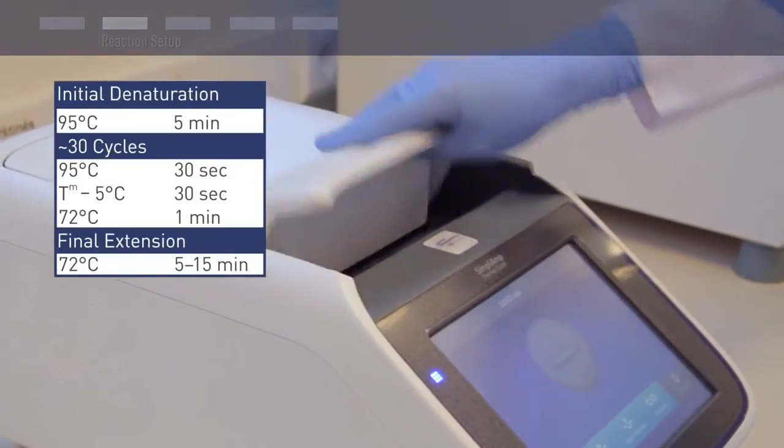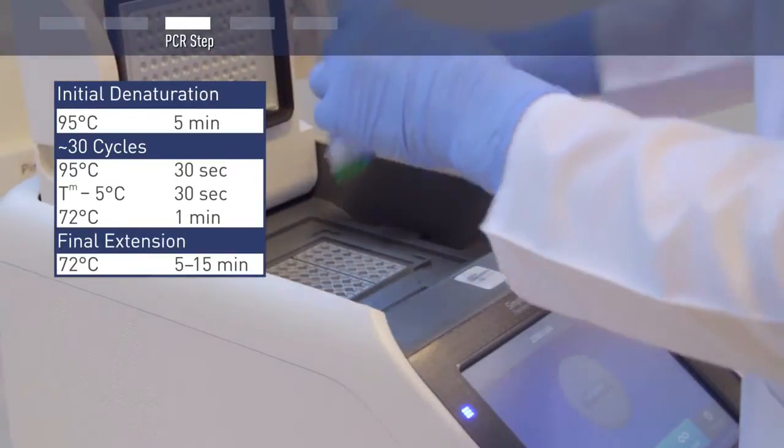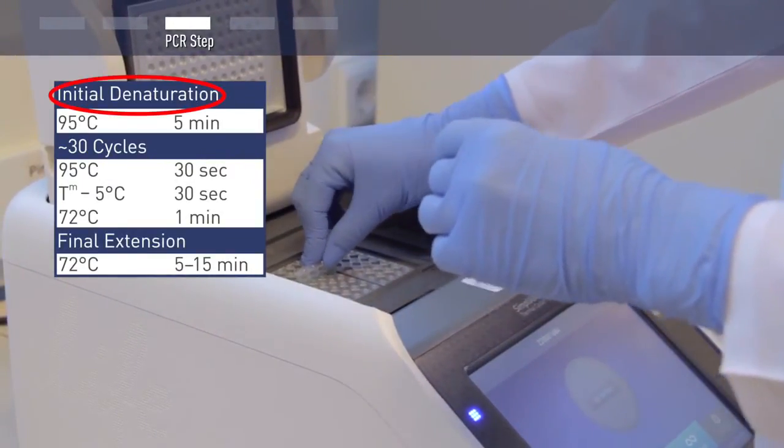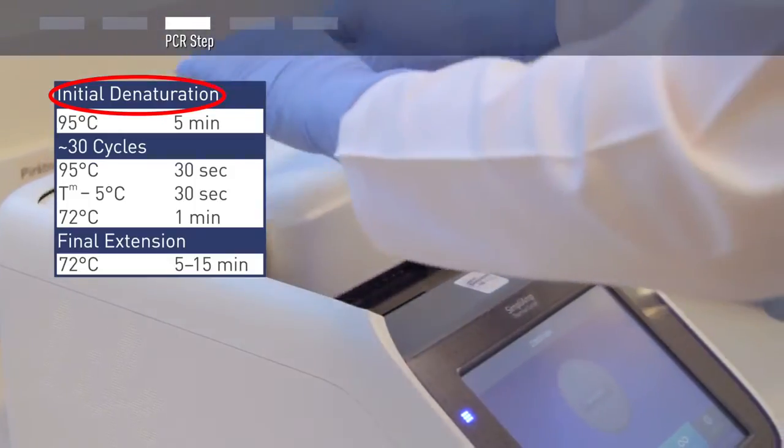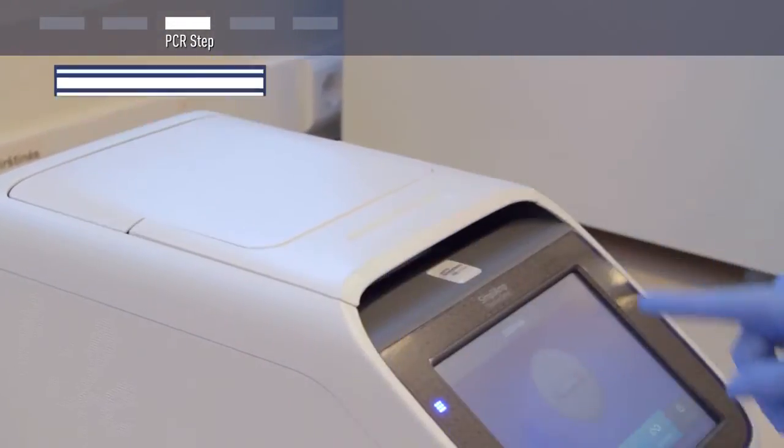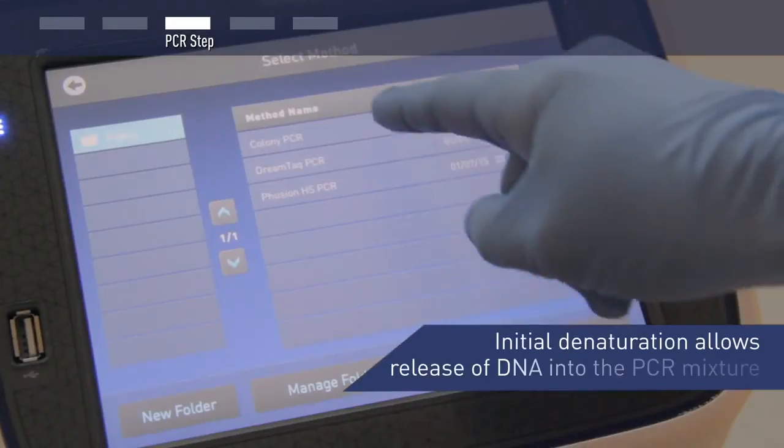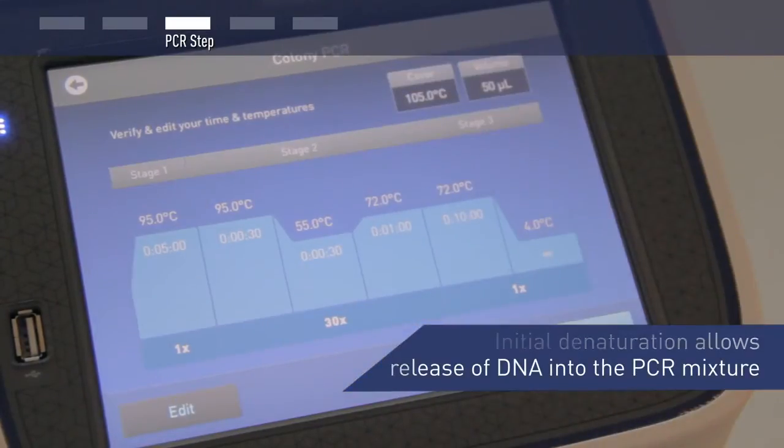After you have picked all of the colonies, proceed with the PCR. After PCR, make sure to include a five-minute initial denaturation step, which will allow release of the DNA from bacterial cells into the PCR mixture.